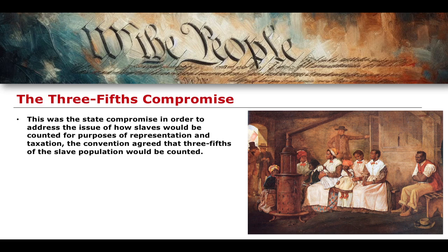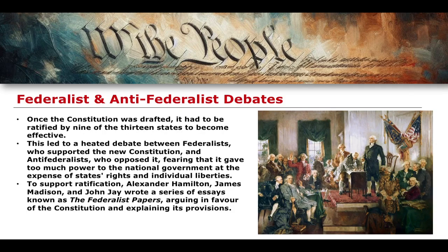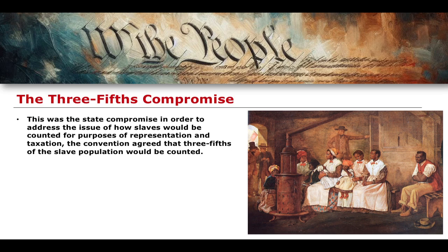The convention agreed to establish the Three-Fifths Compromise. This was established to address how slaves would be counted for the purposes of representation and taxation. Essentially, three-fifths of the slave population would be counted, meaning an individual slave would carry the weight of three-fifths of a person. This is, of course, barbaric by today's standards, but that is how it was represented in the late 1700s as part of the American Revolution.